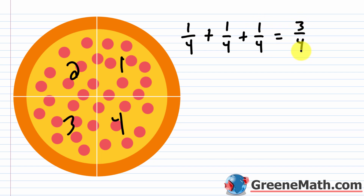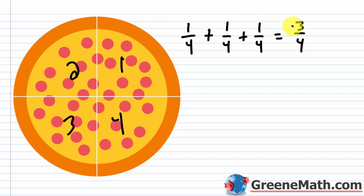We're not going to talk too much about adding fractions here — that's covered later. But basically, when you have the same denominator, you keep that denominator the same and just add the numerators. So one plus one plus one gives three slices out of a total of four.